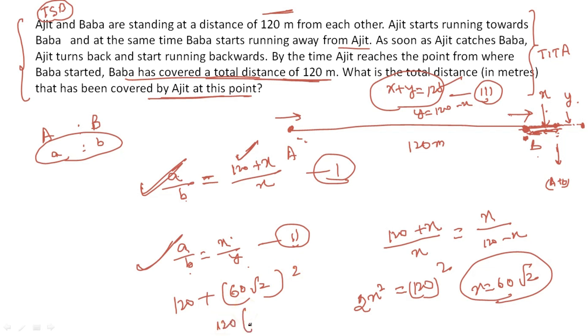So my final solution is 120, take common, 1 plus root 2. This is my solution. Guys, I hope this is clear to everyone. The question was a bit tricky but absolutely CAT level, CAT and XAT level you can say. I hope everyone understood. Thank you so much.